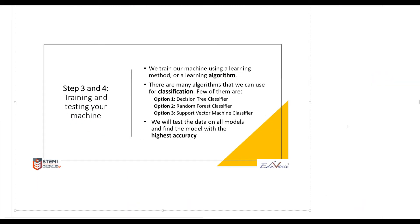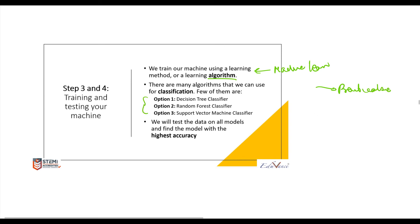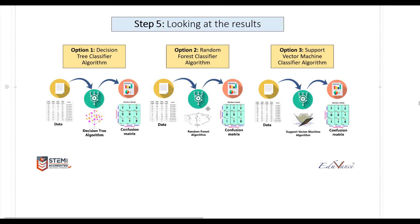Steps three and four involve training and testing your machine. We have to make the machine learn using an algorithm — I will show you that in our practical session. You choose the algorithm; if you are using the free version of the software you can choose whichever algorithm you want. Then you test your machine for accuracy, which I will also show you in the practicals.